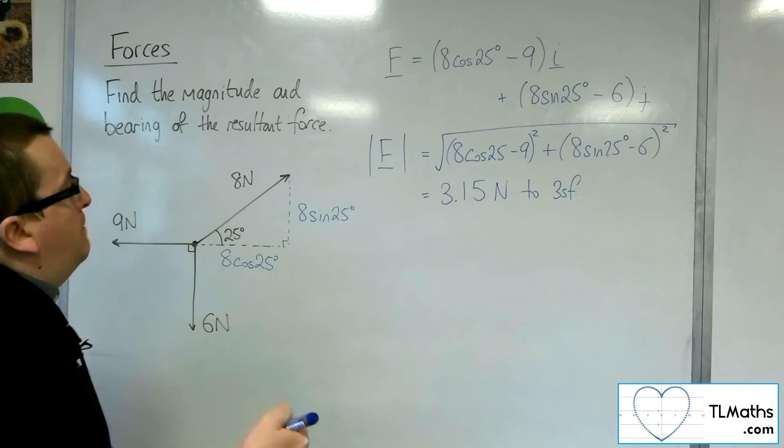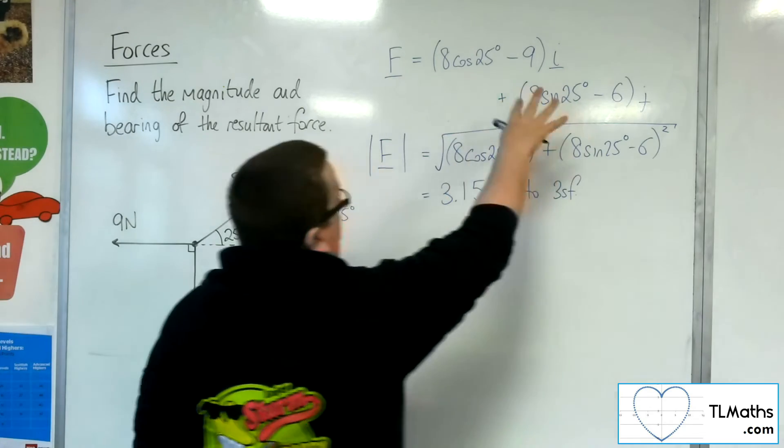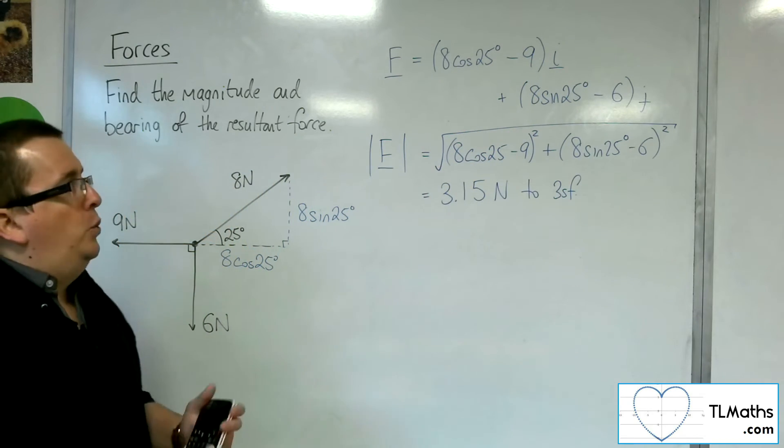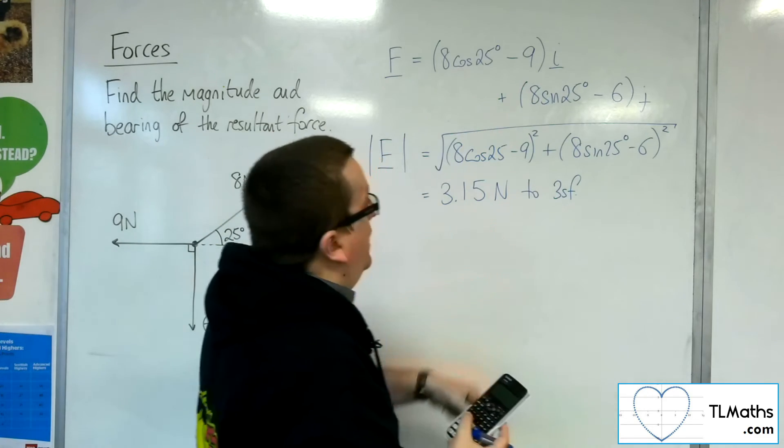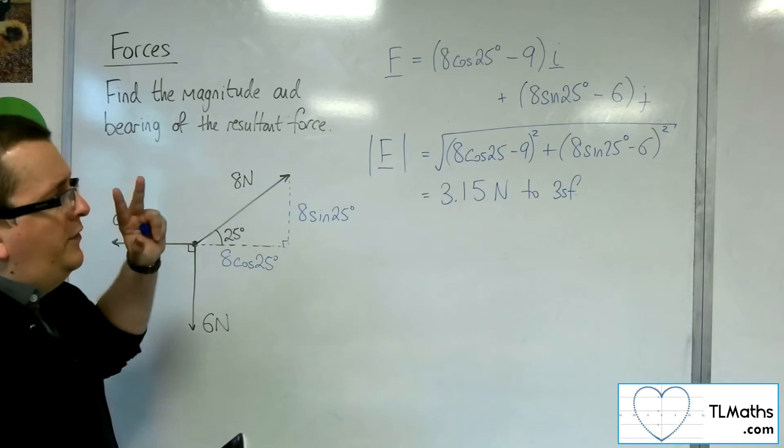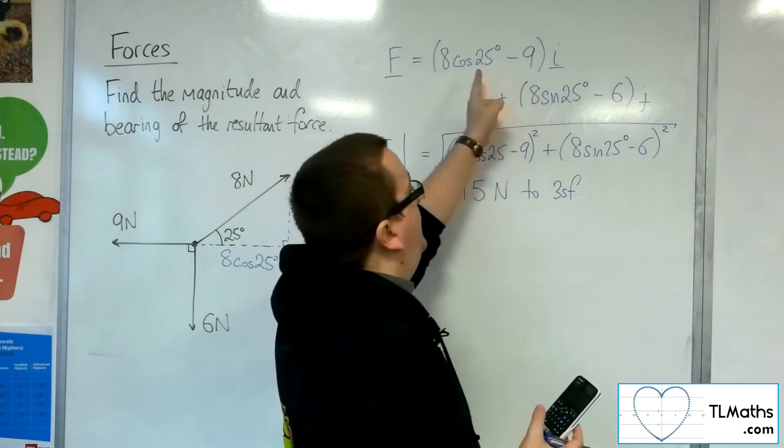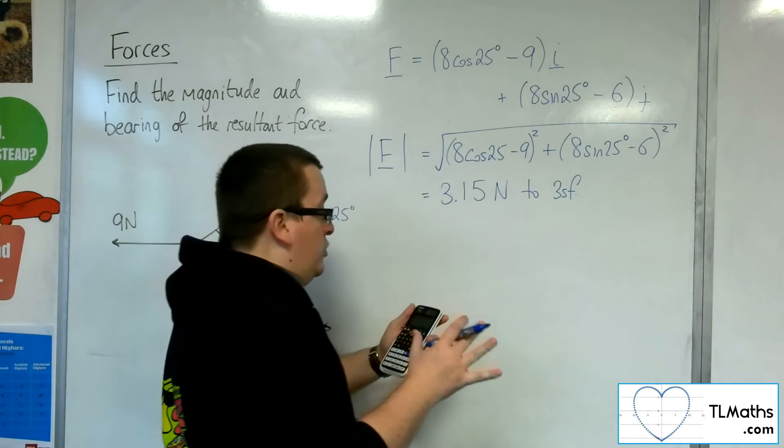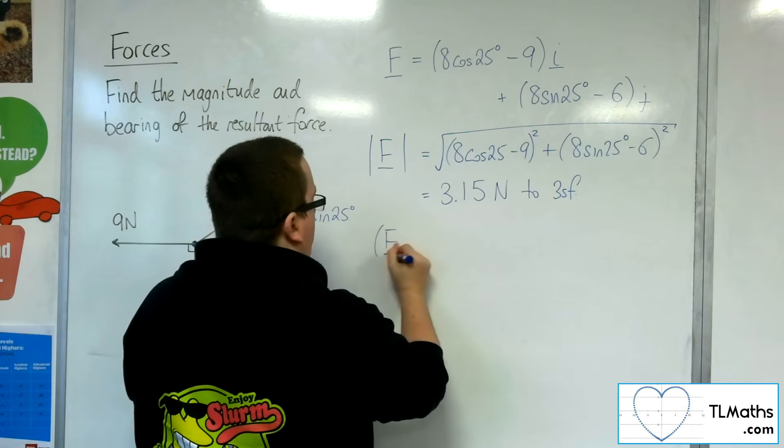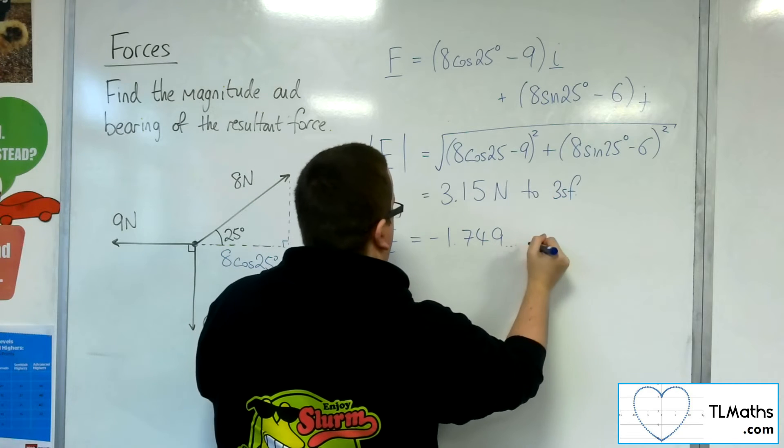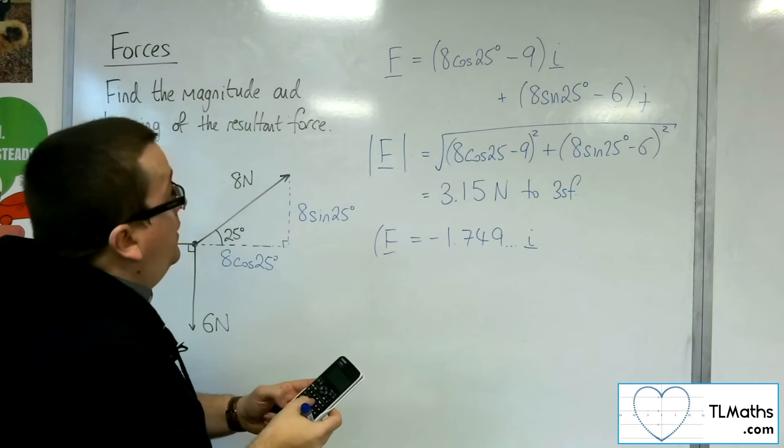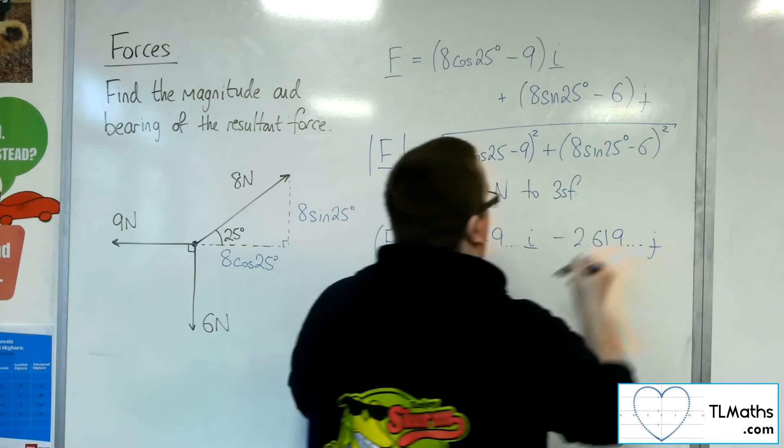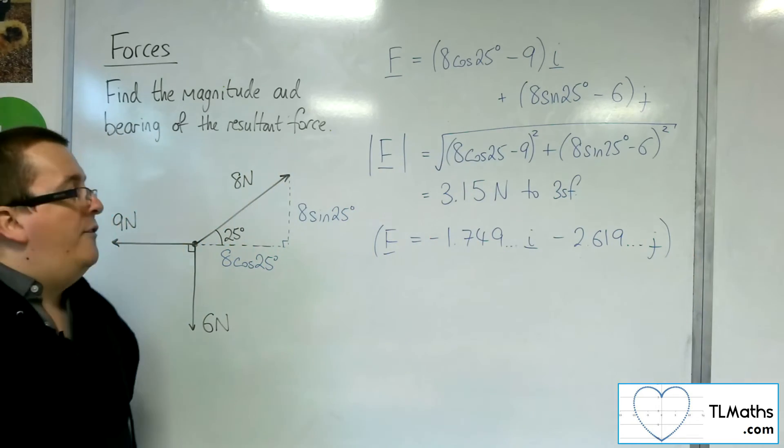We now need to find the bearing. So when you find the bearing, and when you're working with it in this form, it's a very good idea to quickly work out what those individual component values are on your calculator, to check whether they're positive or negative, because it's not clear as to whether these are positive or negative. So if I do that, we've got 8 cos 25 take away 9, which is actually minus 1.749. So F is actually minus 1.749 i, and the 8 sin 25 take away 6 is minus 2.619 j. So that's actually what F is looking like.